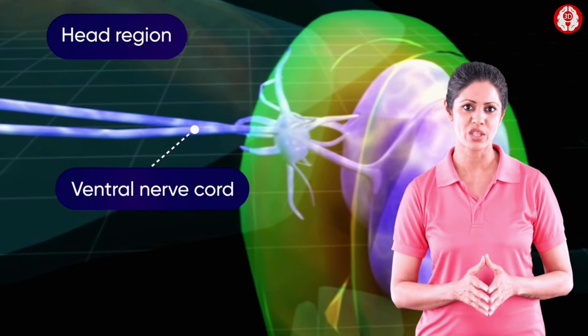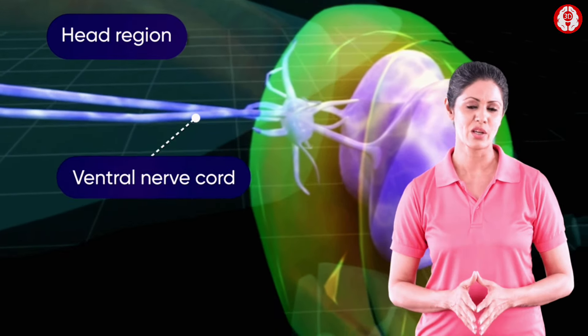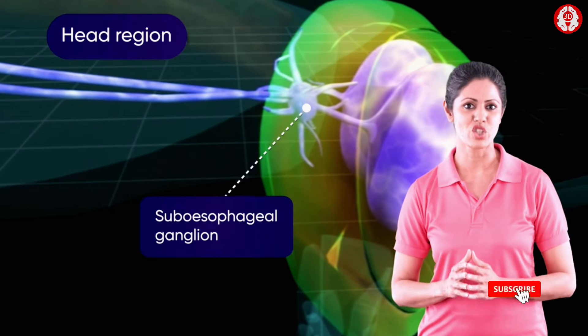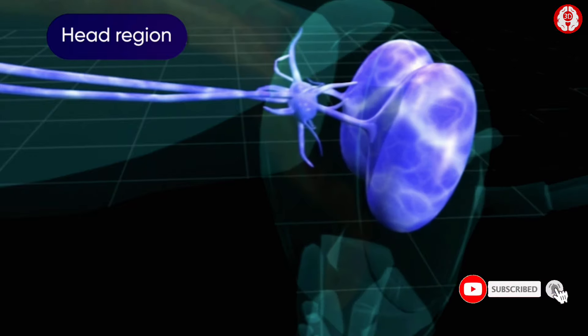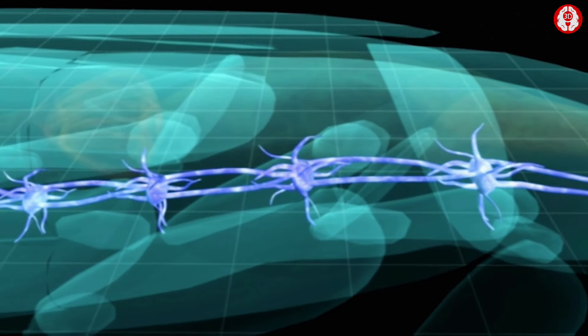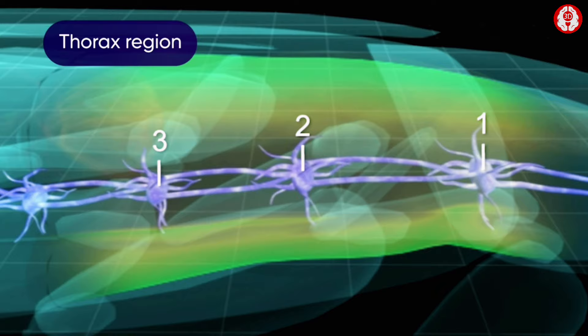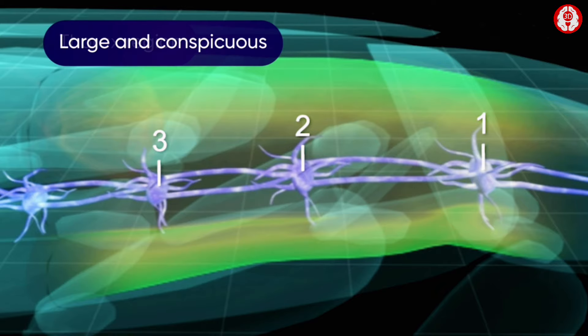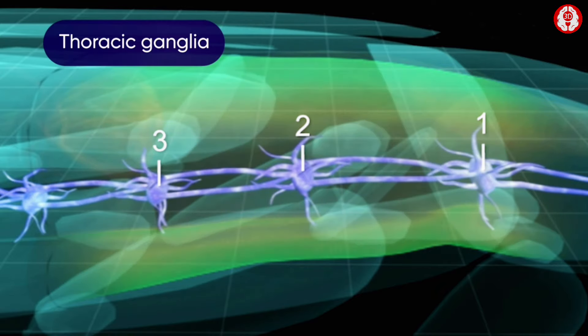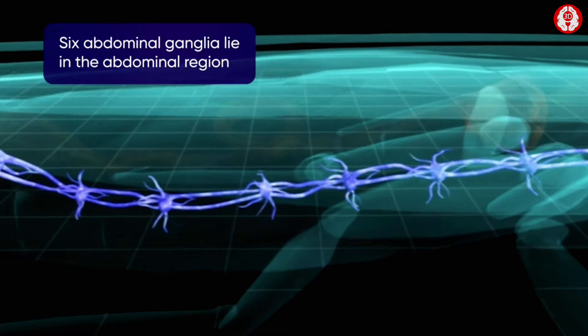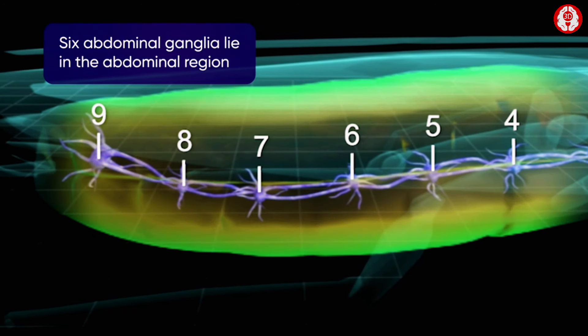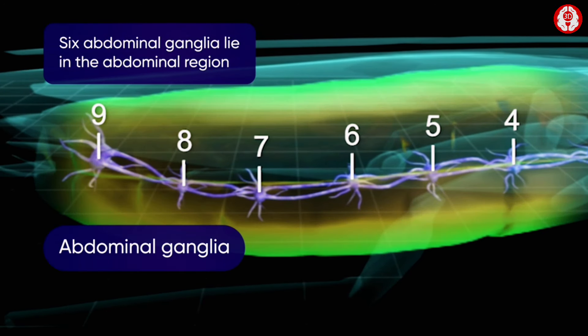the ventral nerve cord lying in the head region, called the sub-esophageal ganglion. The three ganglia lying in the thorax are large and conspicuous and are called thoracic ganglia. The last six ganglia lie in the abdominal region and are called